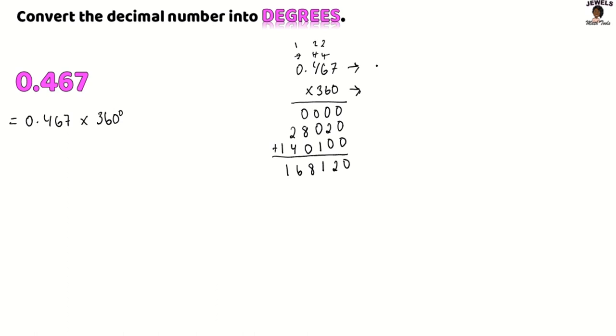So in my 0.467, we have 3 digits behind the decimal point. In 360, there's no digits. So in total, we have 3 digits behind our decimal point. So we'll count 1, 2, 3 and input our decimal point. So my 0.467 in degrees is 168.12 degrees. So that will be my number in degrees.